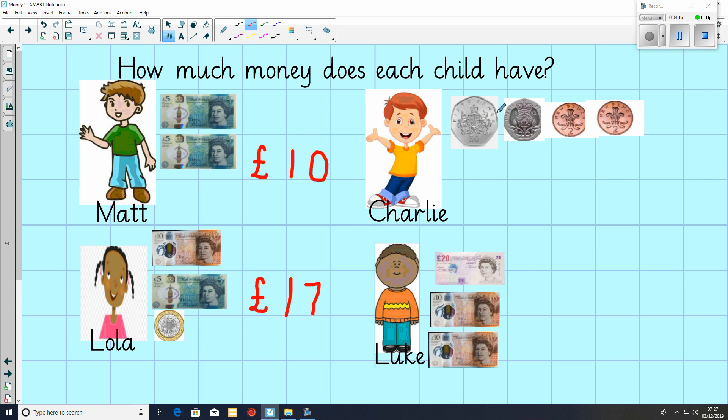Charlie has got 50p, add 20p, which is 70p. Add 2p, add 2p, which is 4p. So altogether, he has got 74 pence.